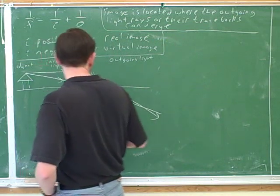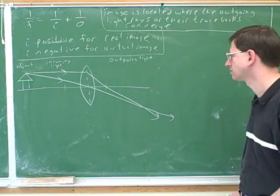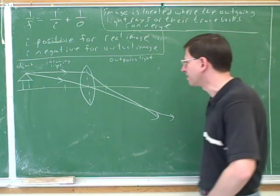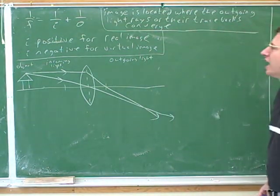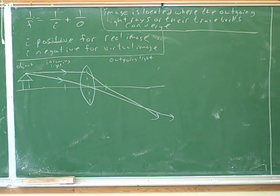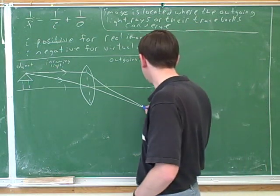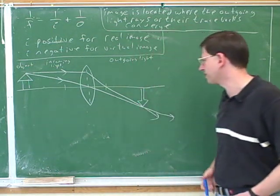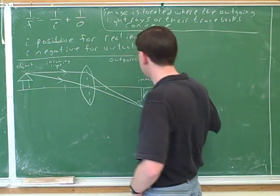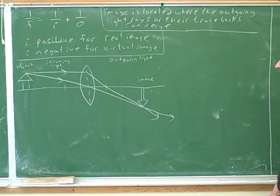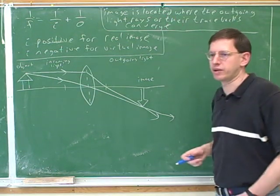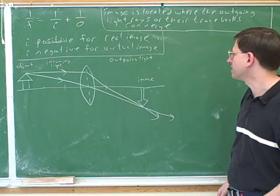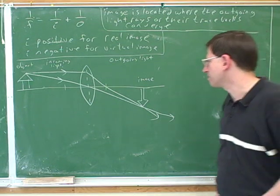Here's another ray of light. Now where is the image located? The image is located where the outgoing light rays converge. Here's where the outgoing light rays converge, so we draw another arrow — this is the image. This is what it means when we say the image is located where the outgoing light rays converge.